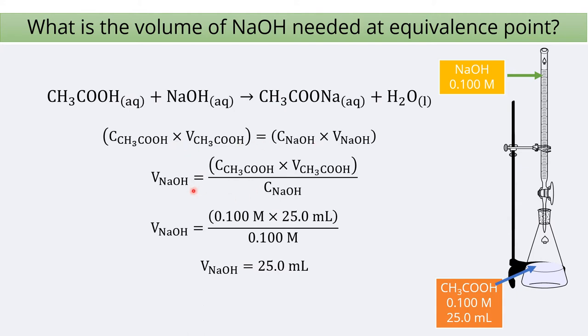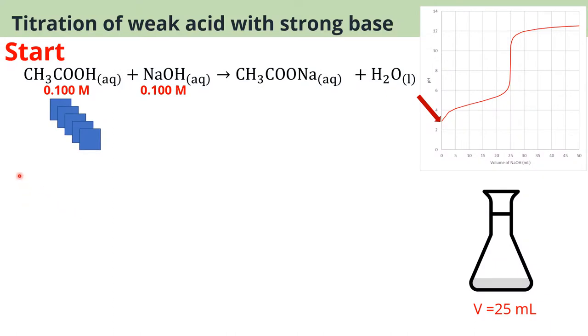The volume of base required to reach equivalence point is 25 ml. So before 25 ml is going to be pH before equivalence point, and after 25 ml is going to be pH after equivalence point. We will look at the start of the titration.